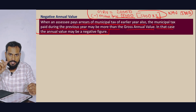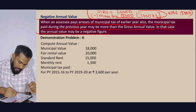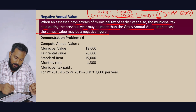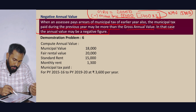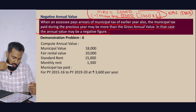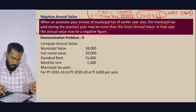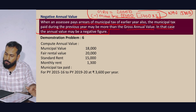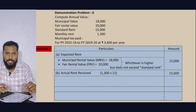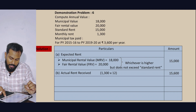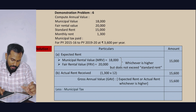Let's look at another example for the negative NAV concept. Municipal Value is 18,000, Fair Rent Value is 20,000 — whichever is higher is 20,000. Standard Rent is 15,000, so Expected Rent = 15,000. Actual rent is 1,300 × 12 = 15,600. Gross Annual Value is whichever is higher = 15,600.